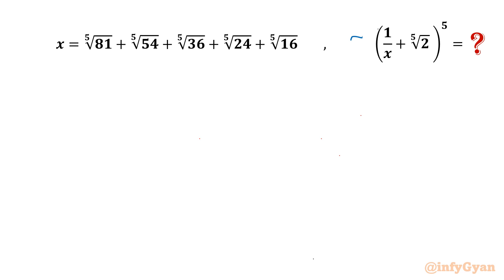Let us call E = 1 over (x + ⁵√2)^5, where x is given as ⁵√81 + ⁵√54 + ⁵√36 + ⁵√24 + ⁵√16.